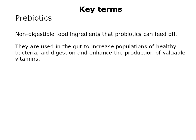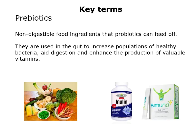Moving on to prebiotics. These two terms are distinct things. Prebiotics are non-digestible food ingredients that probiotics can feed off. So probiotics are the live microorganisms, whereas prebiotics are the food for those organisms. They are used in the gut to increase populations of healthy bacteria, and they can also aid digestion and enhance the production of valuable vitamins. They're available in supplemental form, but also found in a wide variety of foods — generally vegetables and green leafy vegetables. They are essentially a type of fibre.